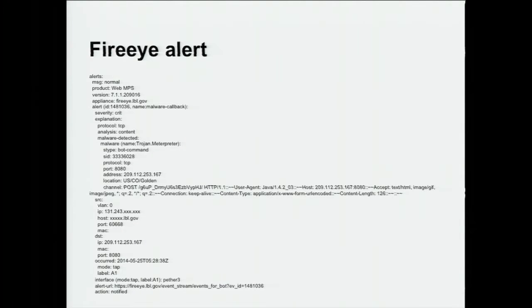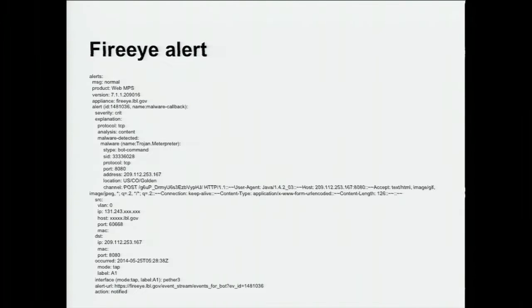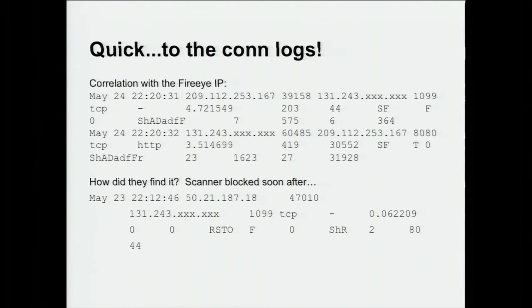This first incident started with a FireEye alert — it wasn't Bro that tipped us off, it was FireEye. We got a hit on a Meterpreter. The first thing we did as incident responders was go to the conn logs and look at the attacker IP. Sure enough, we saw connections on port 1099 and outbound on port 8080. We confirmed with Bro that something weird was going on and the FireEye alert appeared valid.